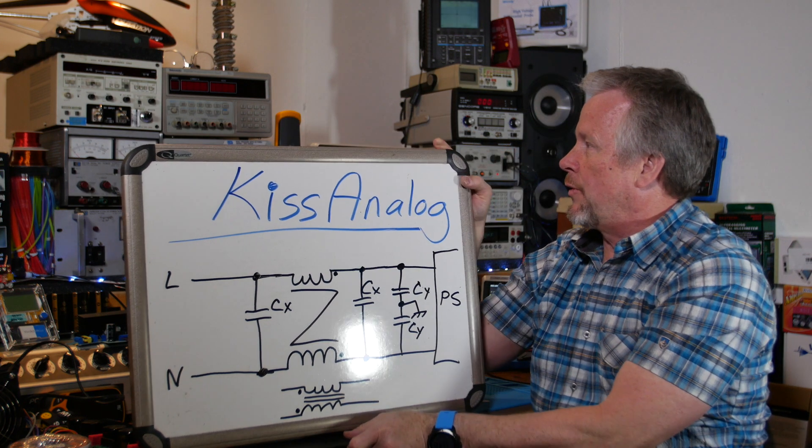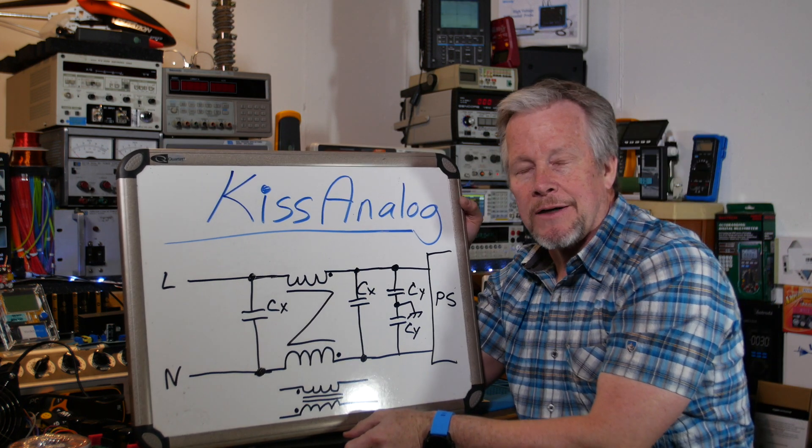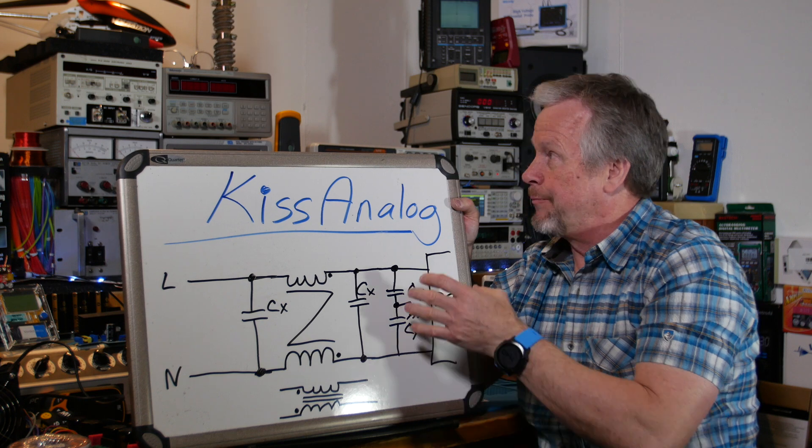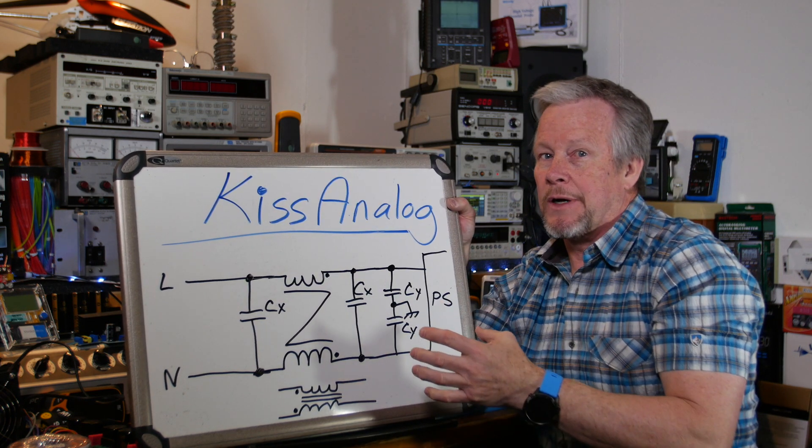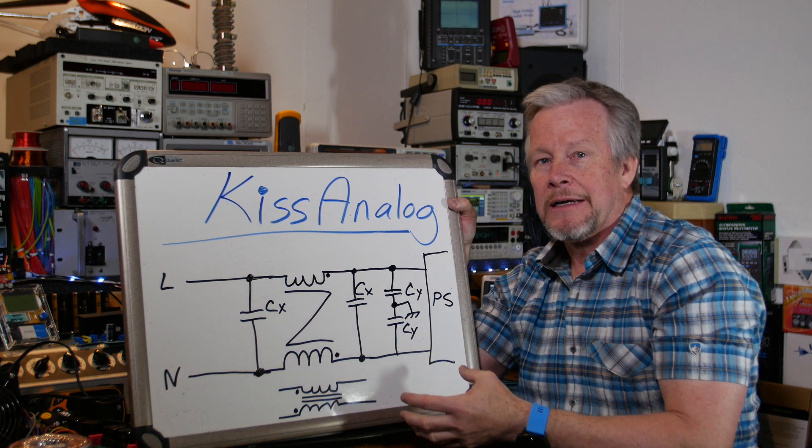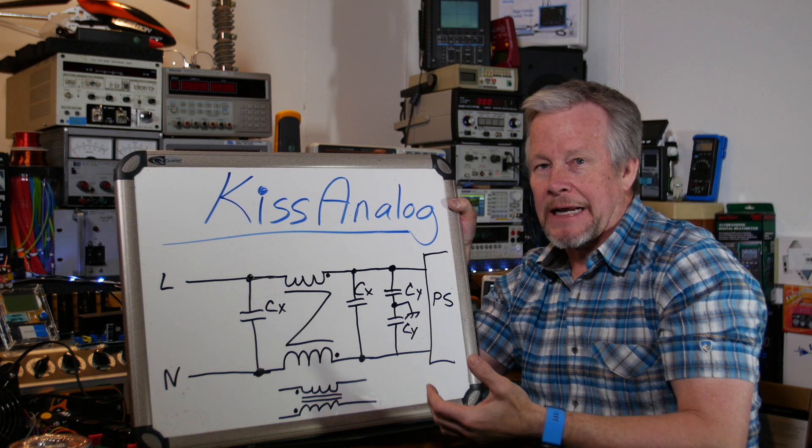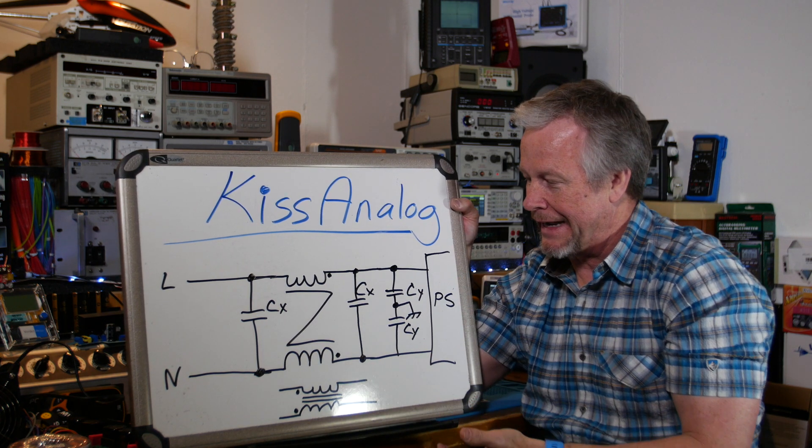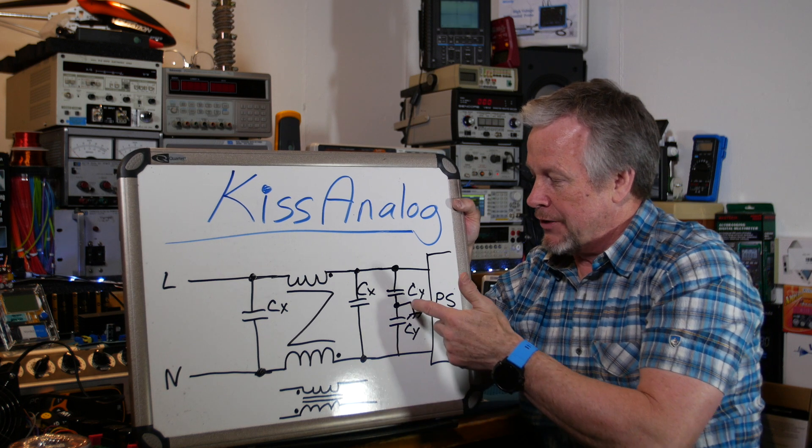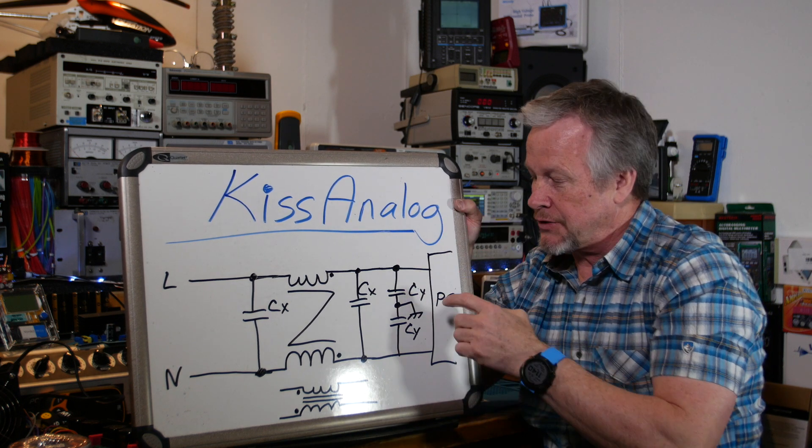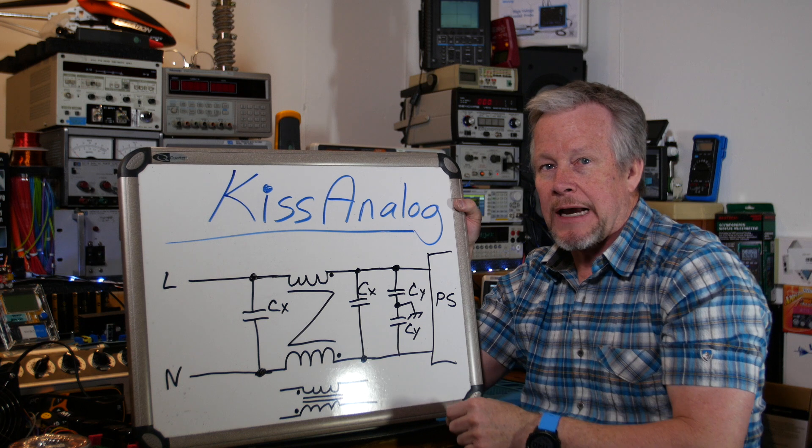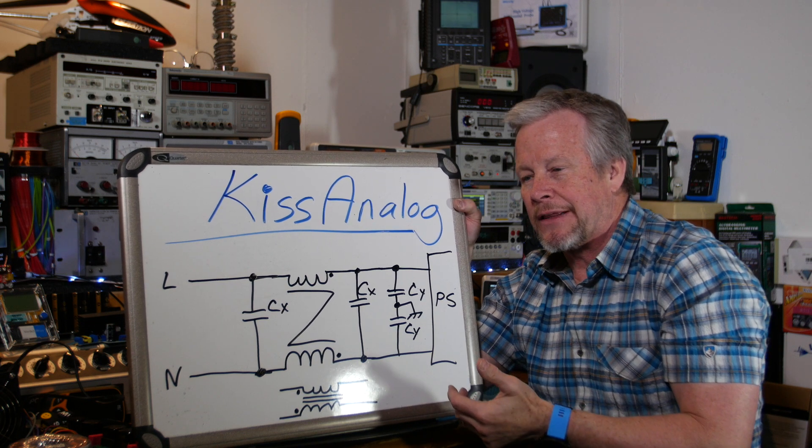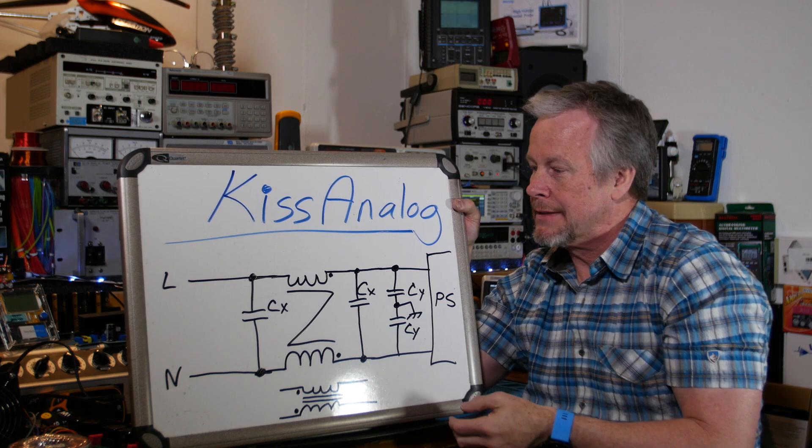You don't want current flowing on your chassis. I don't want to touch one of my pieces of equipment over here and reach over and grab something else and find out that one of them has a higher potential on it because it had a higher leakage current and I end up being the guy equalizing those two things. Yeah, you don't want to be that guy. So UL limits it for residential use, 0.5 milliamps. Industrial use, I think it's three milliamps.